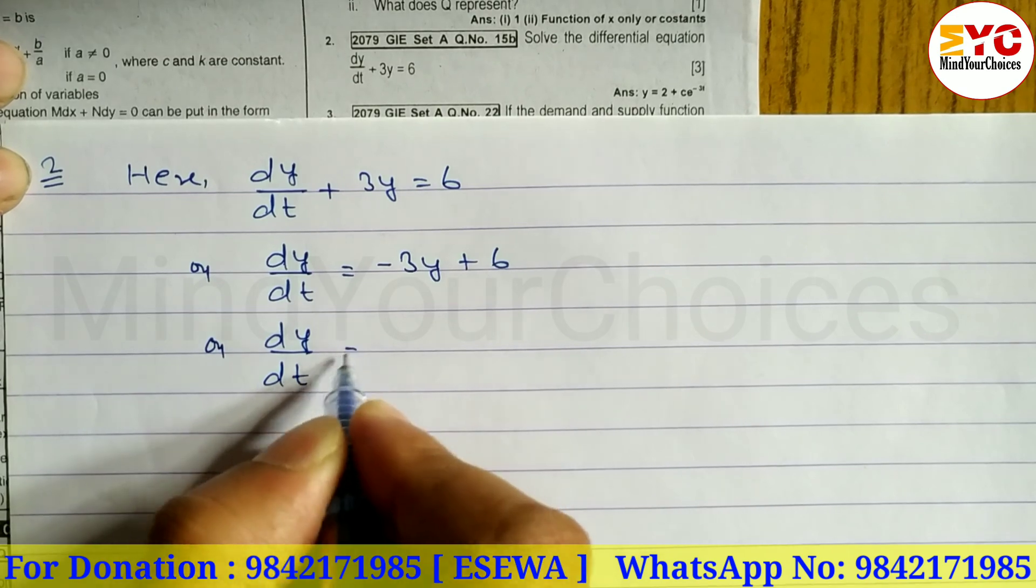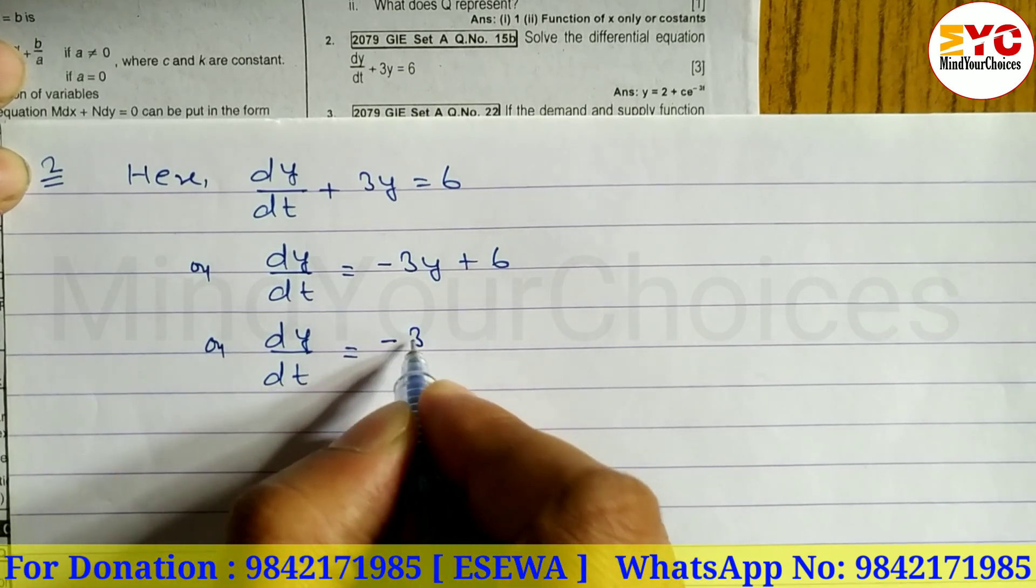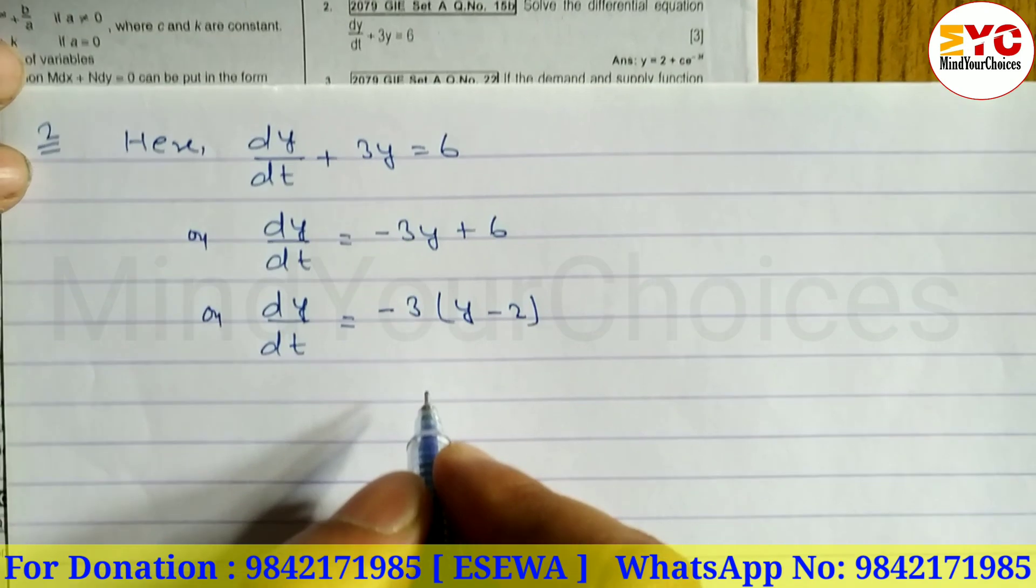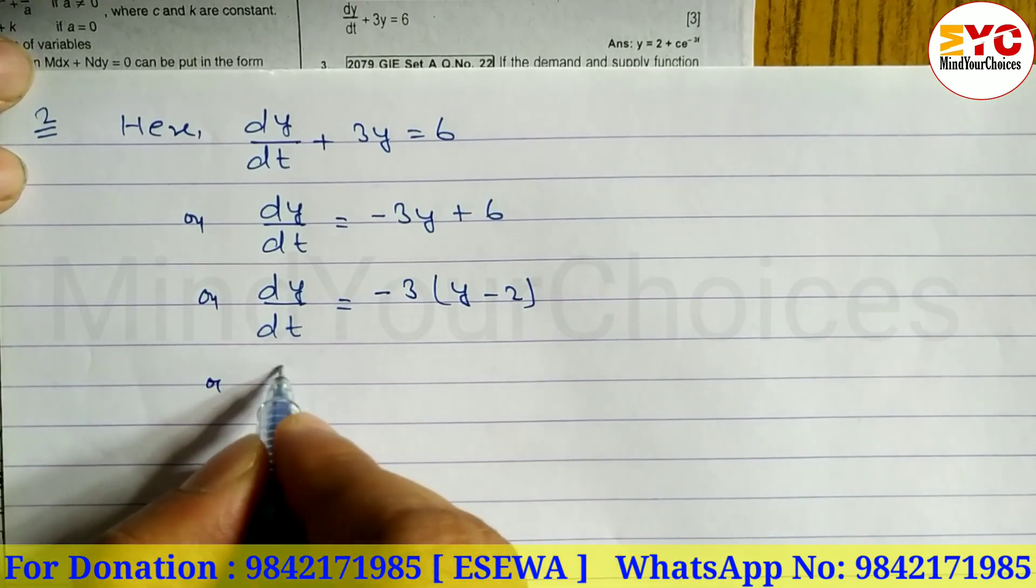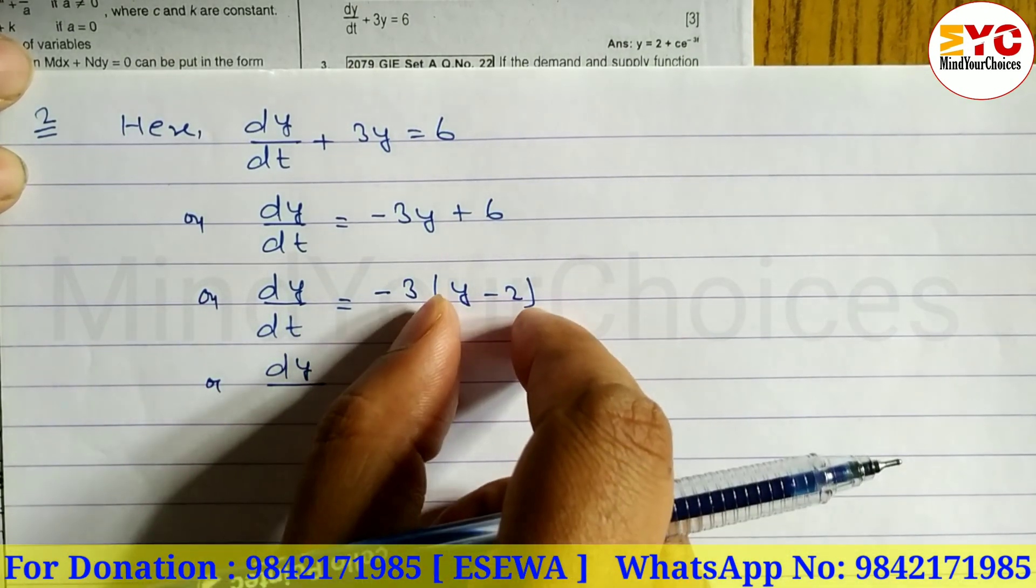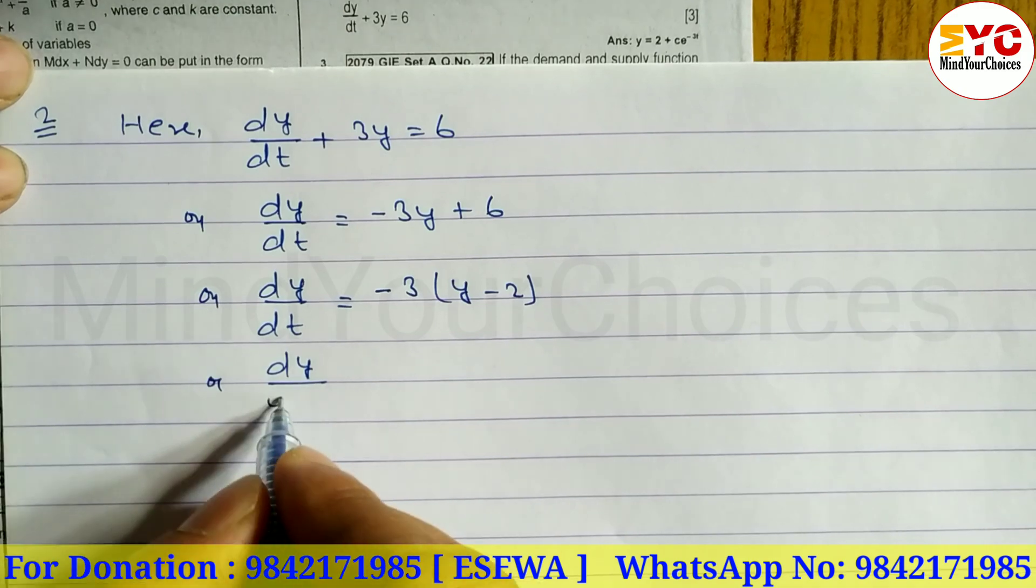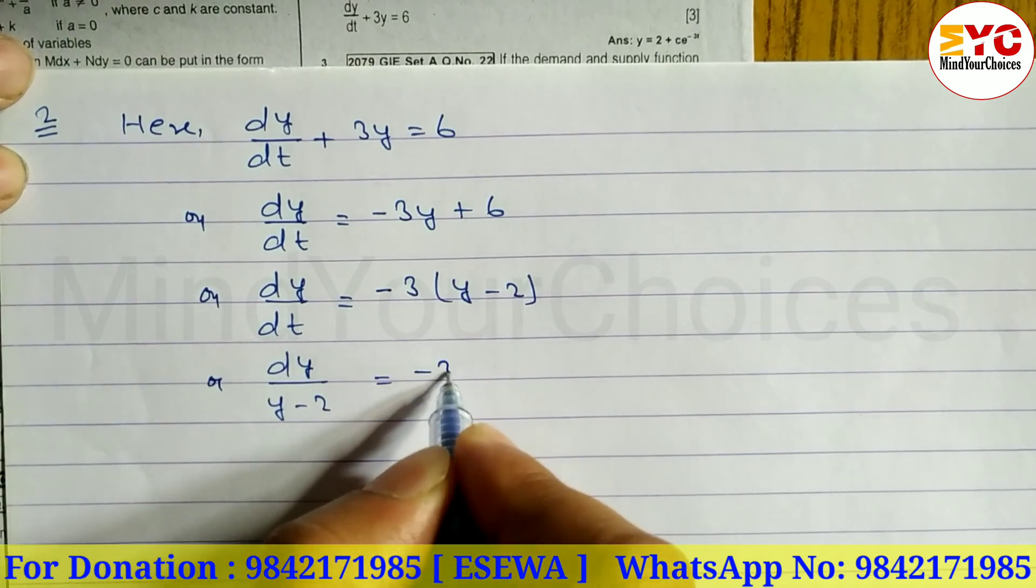Or dy/dt equals, taking minus 3 common, minus 3 times (y minus 2). Rearranging this: dy/(y-2) equals minus 3 dt.